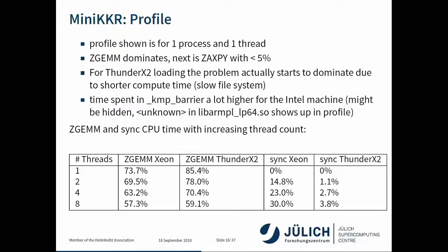Skipping the screenshots and going to the summary: I profiled with one process and thread, then went up to eight threads and also to the full node. ZGEMM completely dominates this application. Surprisingly, we have a lot more CPU time spent on the Xeon for synchronization — but this cost might have been hidden. There was an unknown routine in the ARMPL library that might have had something to do with CPU synchronization.